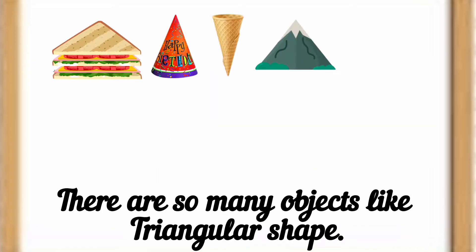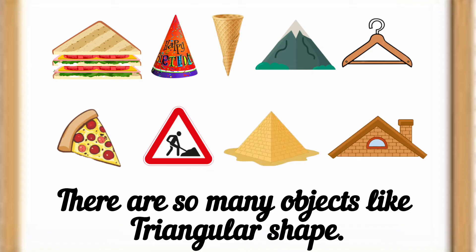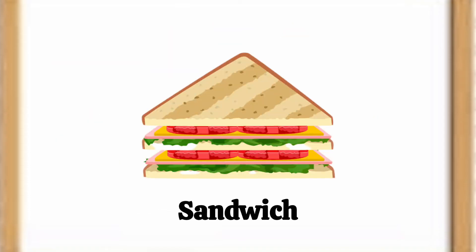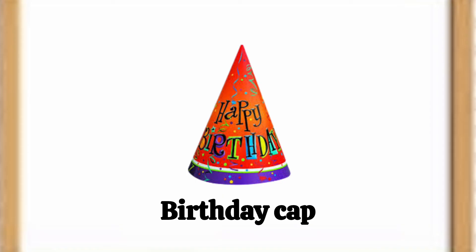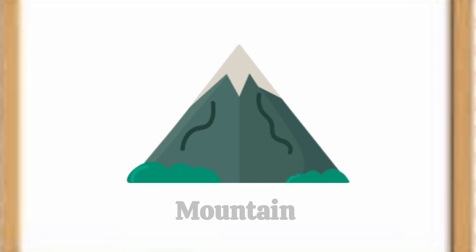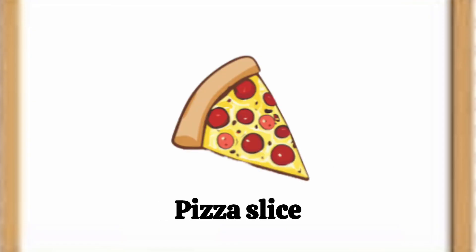There are so many objects with a triangular shape. They are: sandwich, buttcap, ice cream cone, mountain, cloth hangers, pizza slice.